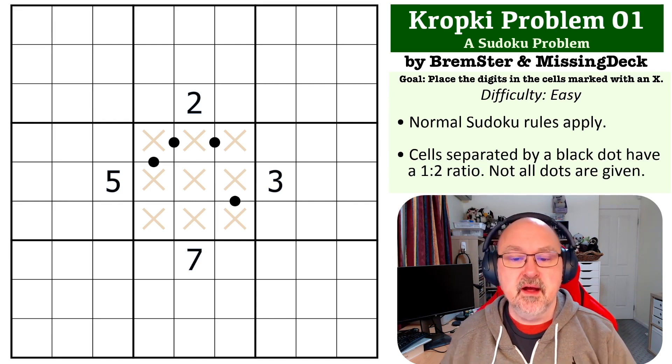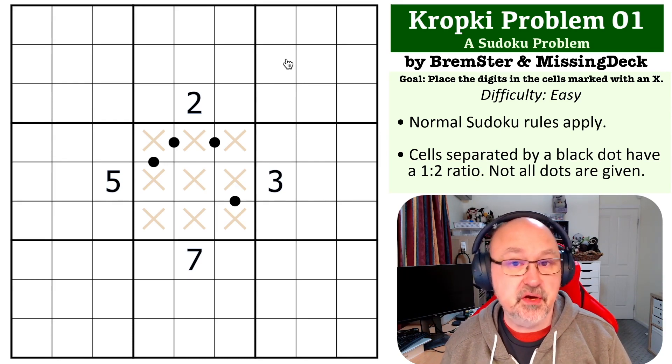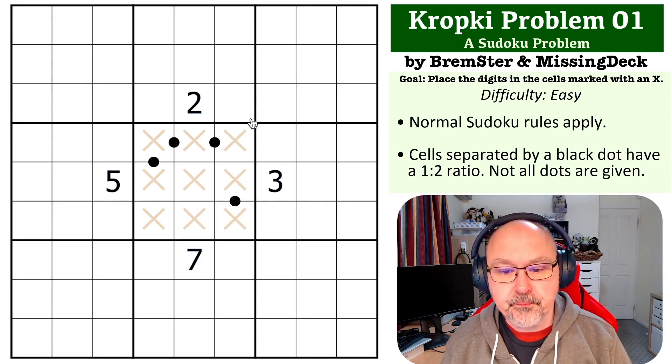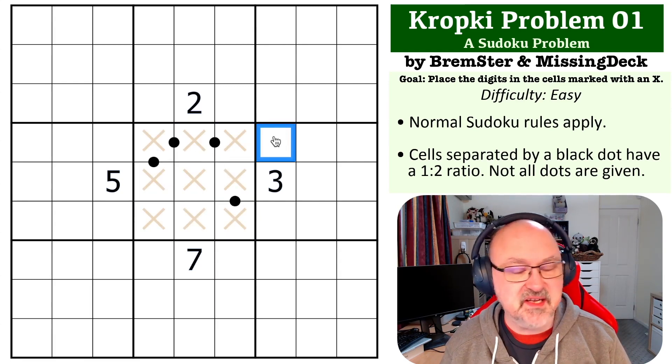Okay, so this one is basically a gentle introduction to ratio constraints. If you think about what can go into box five, there's a couple of ways of starting this.